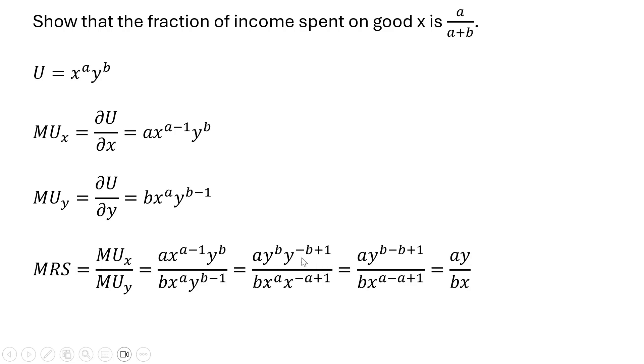Now we add up the y variables in the numerator and the x variables in the denominator. The b minus b cancels, leaving y raised to the power of 1, or just y. So the numerator is a times y. Similarly, a minus a cancels in the denominator, leaving just x. The denominator is b times x, giving us our marginal rate of substitution: MRS = ay/bx.